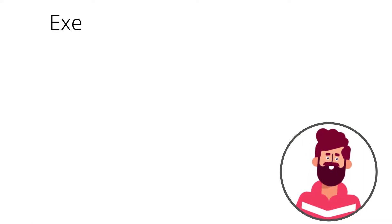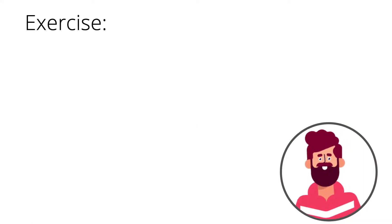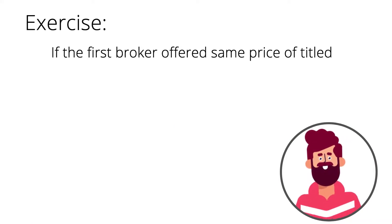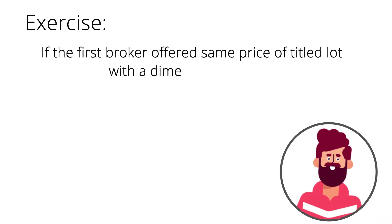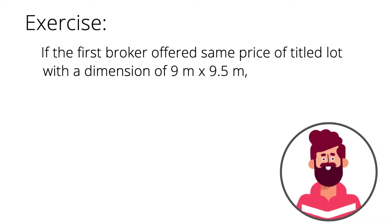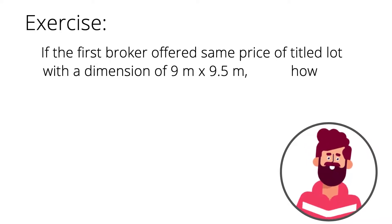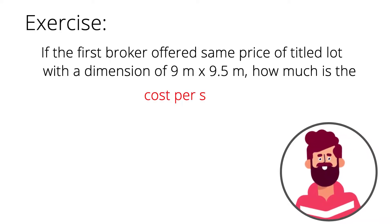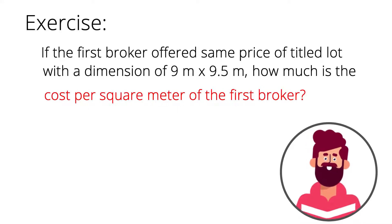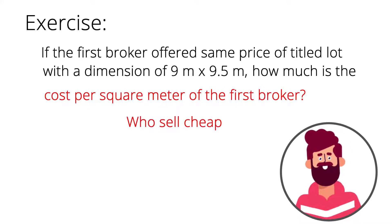For your problem exercise, if the first broker offered the same price for a titled lot with a dimension of 9 meters by 9.5 meters, how much is the cost per square meter of the first broker? Who now sells cheaper?